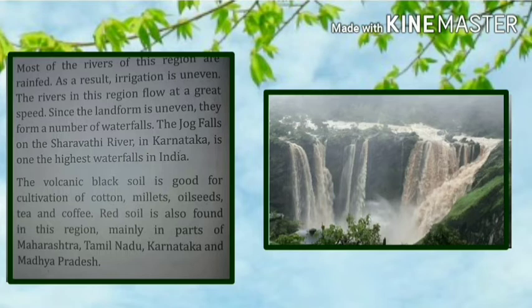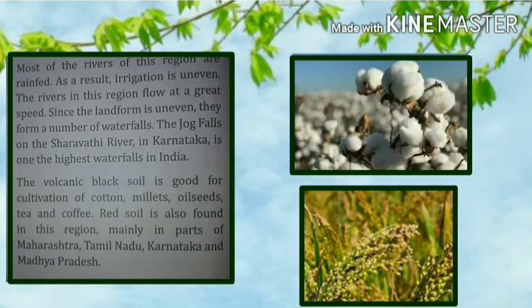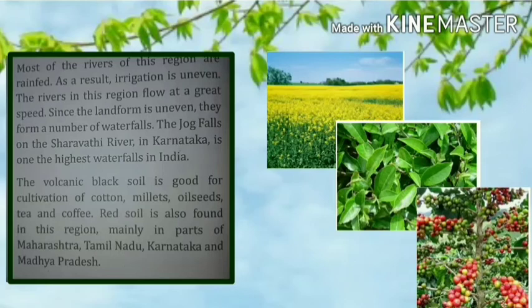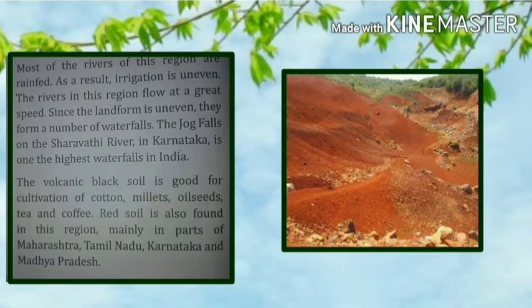The volcanic black soil is good for cultivation of cotton, millets, oil seeds, tea, and coffee. Beside this, red soil is also found in this region, mainly in parts of Maharashtra, Tamil Nadu, Karnataka, and Madhya Pradesh.